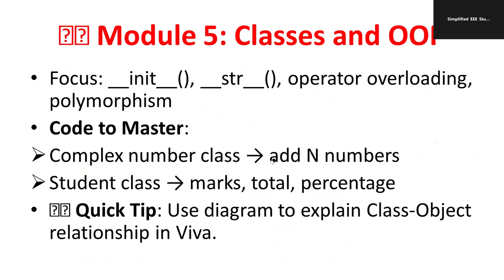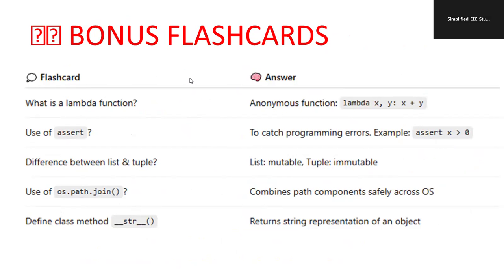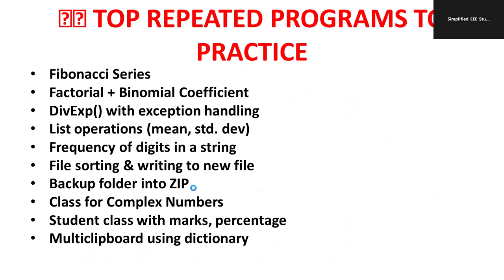Now I would like to talk about flashcards. For example: what is a lambda function — write a shortcut. What is the meaning of assert, importance of assertion. Difference between list and tuple — list is mutable where tuple is immutable. What is the meaning of os.path.join and the importance of the os module. Study the __str__ method and __init__ method. The __str__ method returns the string representation of the object so it prints in a presentable, readable form. Write examples. These are the most repeated programs for university questions.